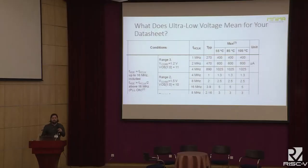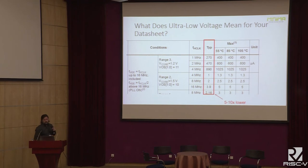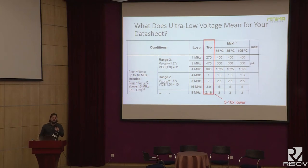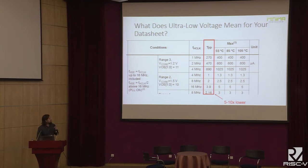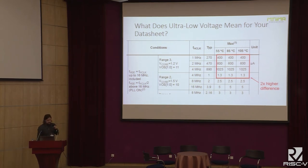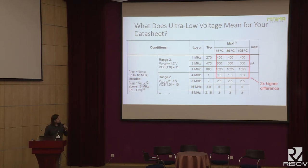This is more of a high-level case. If you're a chip provider, what does that mean for your datasheet? If you use this at low voltage, you're going to have very good numbers at typical cases — 5 to 10x lower depending on the frequency. At a few megahertz you're talking about 10x lower, and at around 64 MHz you're getting about 2x lower. You'll also hit a higher difference in the maximum cases.